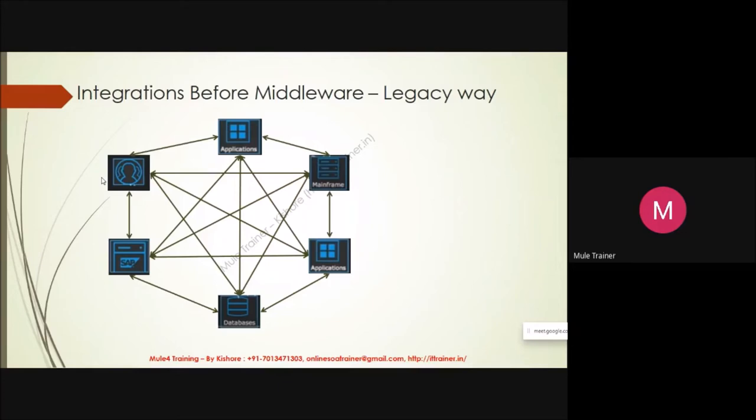If you have N systems, you need at least N times N-minus-1 integrations. This is not an ideal way to do integration. At some point your systems will be messed up with integrations and you will lose track of them. So what is the best way to integrate things? How did the industry solve this problem?